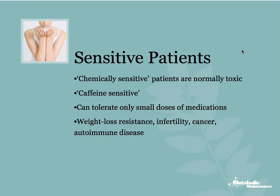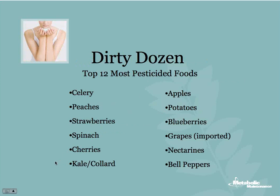Here is a list called the Dirty Dozen — the top most pesticide-laden foods from the EPA. Not all patients can afford organic, but if they're going to buy some, concentrate on the most toxic foods. The list includes: celery, peaches, strawberries, spinach, cherries, kale or collard greens, apples, potatoes, blueberries, imported grapes, nectarines, and bell peppers. If you're going to buy organic, buy at least these.